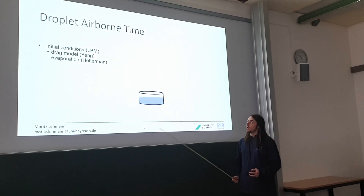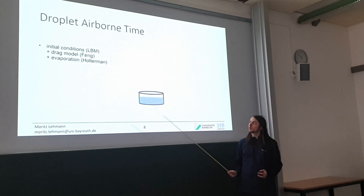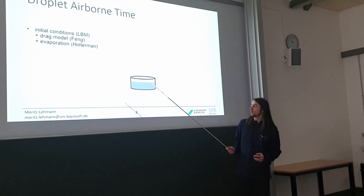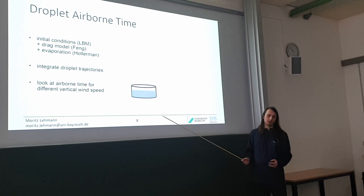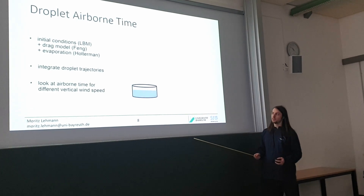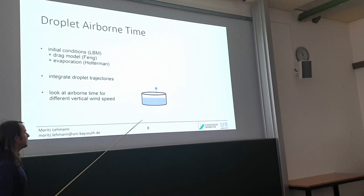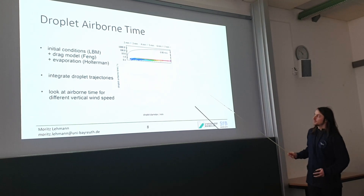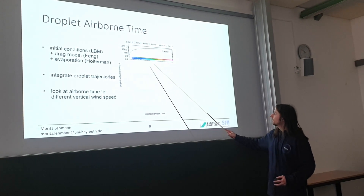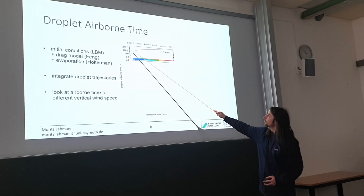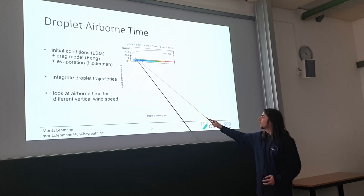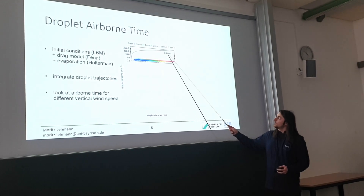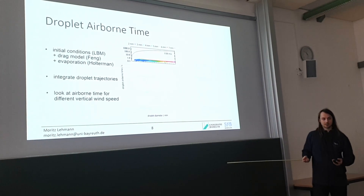Now I estimated the airborne time. The simulations give me the initial conditions — the speed and size of all the droplets. I add a drag model so the droplets in the air get slowed down, and they can also evaporate. I then integrate the trajectories with a Runge-Kutta 4 method and look at the airborne time depending on the vertical wind velocity. The raindrop comes in, spray comes out, and I measure how long each spray droplet is in the air. The x-axis is the droplet diameter, each dot is a single droplet, and the airborne time is on the vertical axis — we see that the airborne time for all of them is below one second. So they fly up and then fall down again; nothing happens. But this is at zero wind velocity.